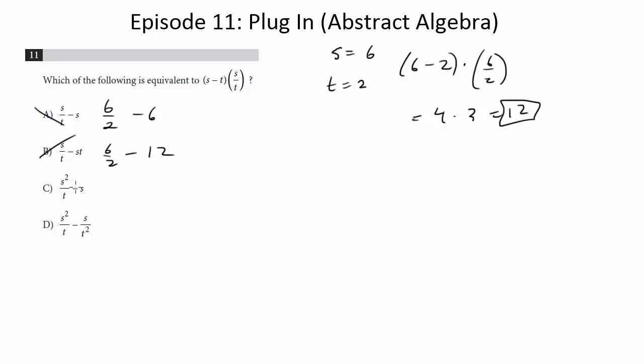How about c: s squared which would be 36 divided by two minus s, so minus six, and this would be 18 minus six which is twelve, so that looks pretty good.